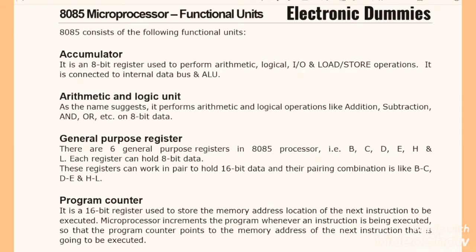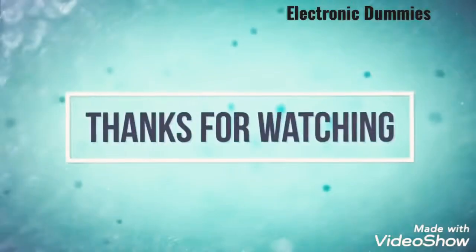Program counter: it is a 16-bit register used to store the memory address location of the next instruction to be executed. The microprocessor increments the program counter whenever an instruction is being executed, so that it points to the memory address of the next instruction to be executed.